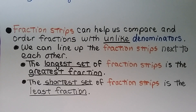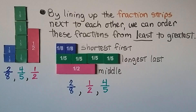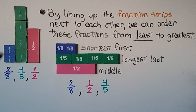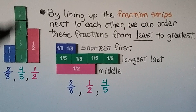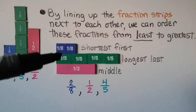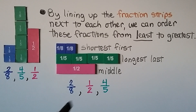Fraction strips can help us compare and order fractions with unlike denominators — we line up the fraction strips next to each other. The longest set of fraction strips is the greatest fraction, and the shortest set is the least fraction. Here we have two-eighths, four-fifths, and one-half. Two-eighths is the shortest so it goes first; four-fifths is the longest so it goes last; and one-half goes in the middle.